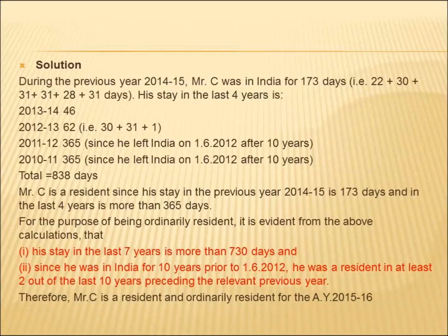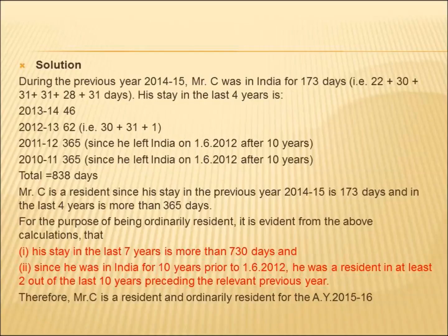Mr. C's stay in the last 7 years is clearly more than 730 days, since in the last 4 years alone his total stay was 838 days. And since he was in India for 10 years continuously prior to 2012, he was resident in at least 2 out of the last 10 years. Both conditions are satisfied, so Mr. C is Resident and Ordinarily Resident for the assessment year 15-16.